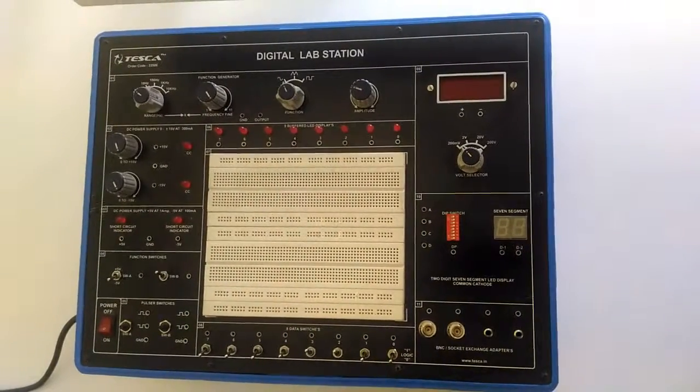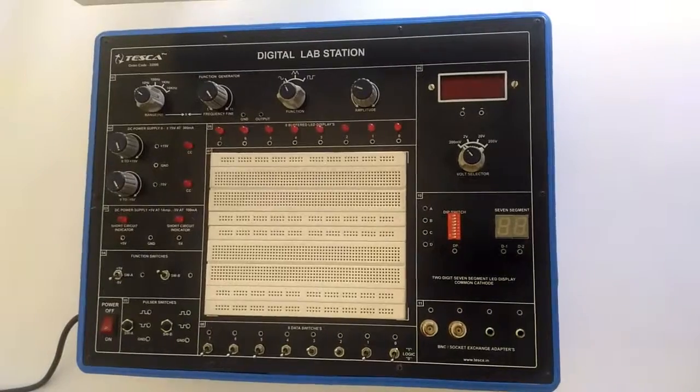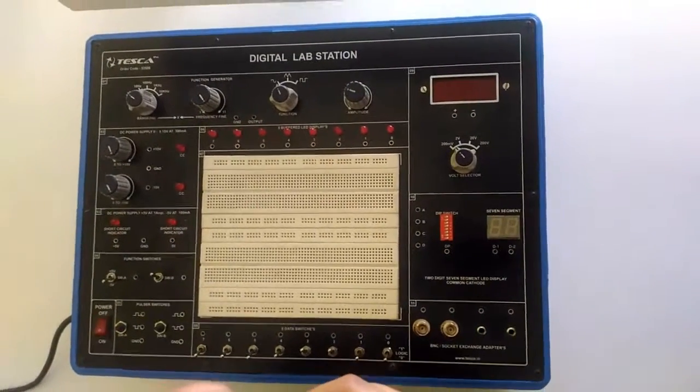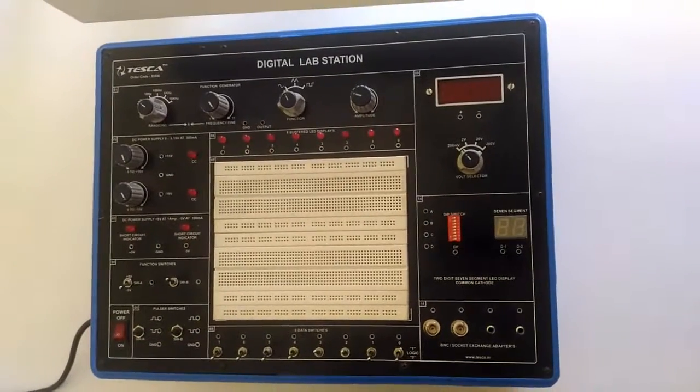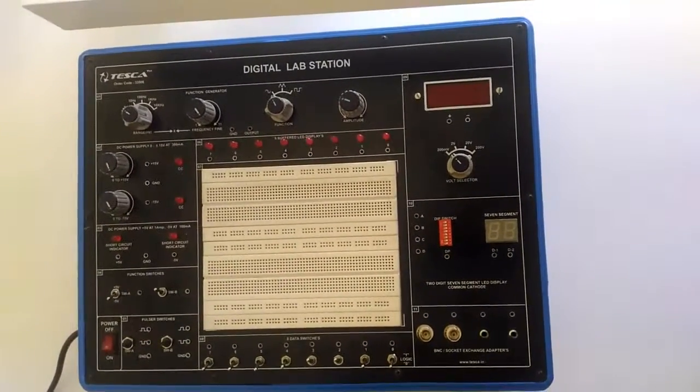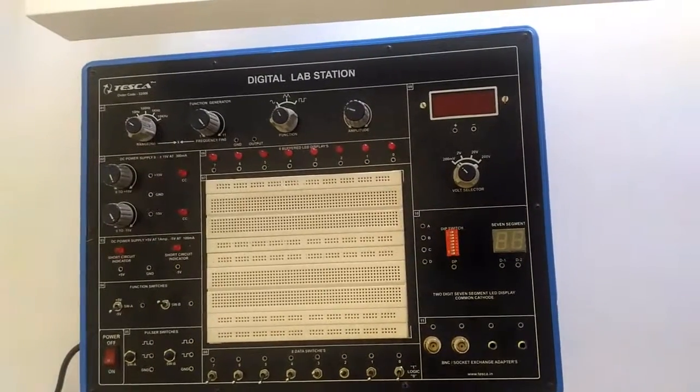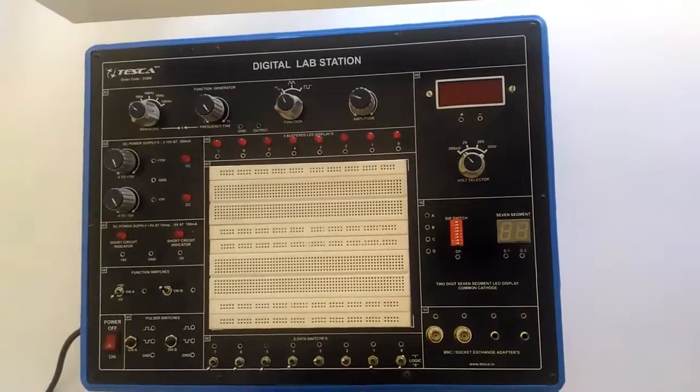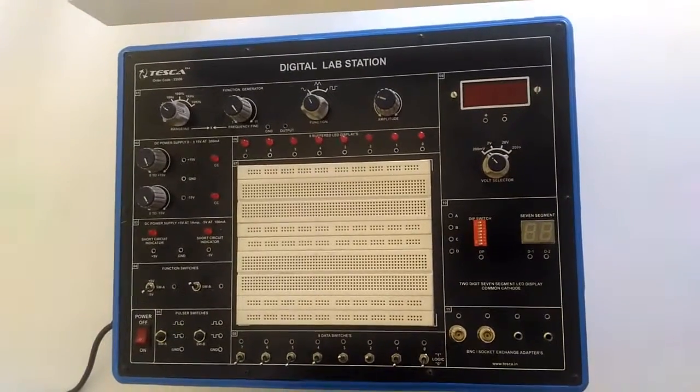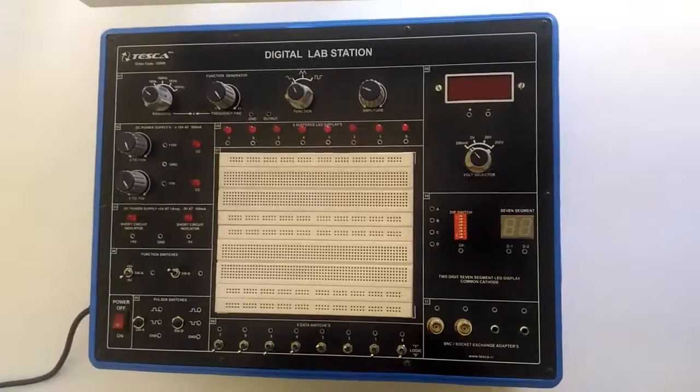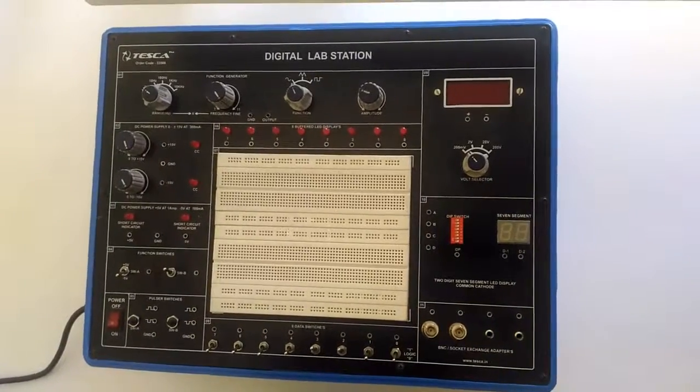Coming on to our next experiment that is how to prove the De Morgan theorems using this digital lab station. For the purpose, I am using the theorem 10 of lab manual that is A dot B bar is equals to A bar plus B bar. For the purpose, I am using the IC 7408 and 7404. I am inserting these ICs in the breadboard like this.